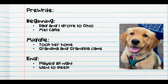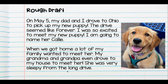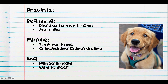I talked about how the car ride seemed like it was never going to end because I was so excited. The drive seemed like forever. I was so excited to meet my new puppy. I'm going to name her Callie. The middle of my story: when we got home, a lot of my family wanted to meet her. My grandma and grandpa even drove to my house to meet her. She was very sleepy from the long drive. So once again, I talked about my grandma and grandpa coming, and how she was so sleepy from the long drive. I didn't write my end yet — I'm still thinking and working on that, so that's not ready for me to share.